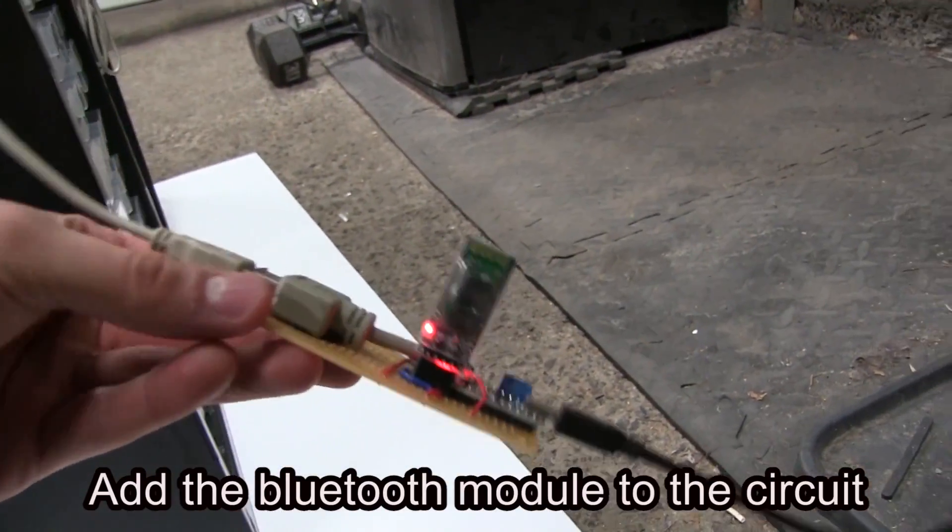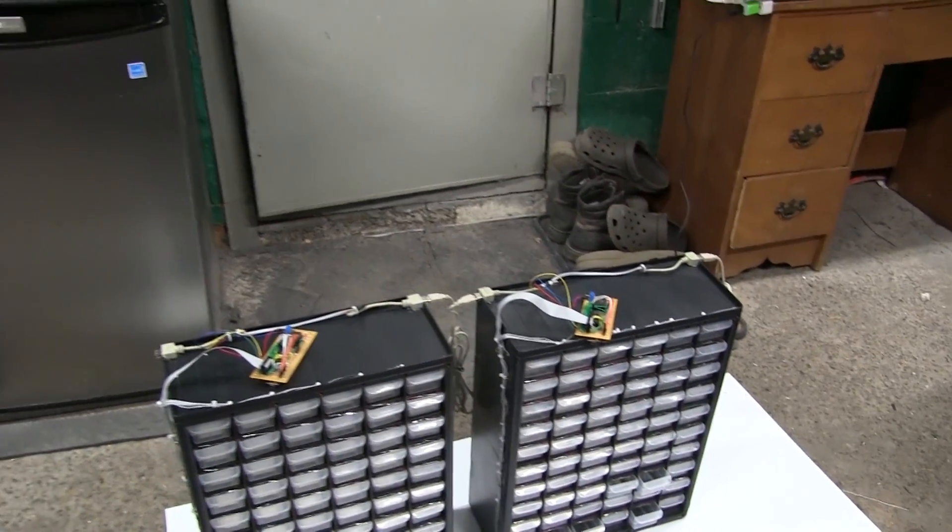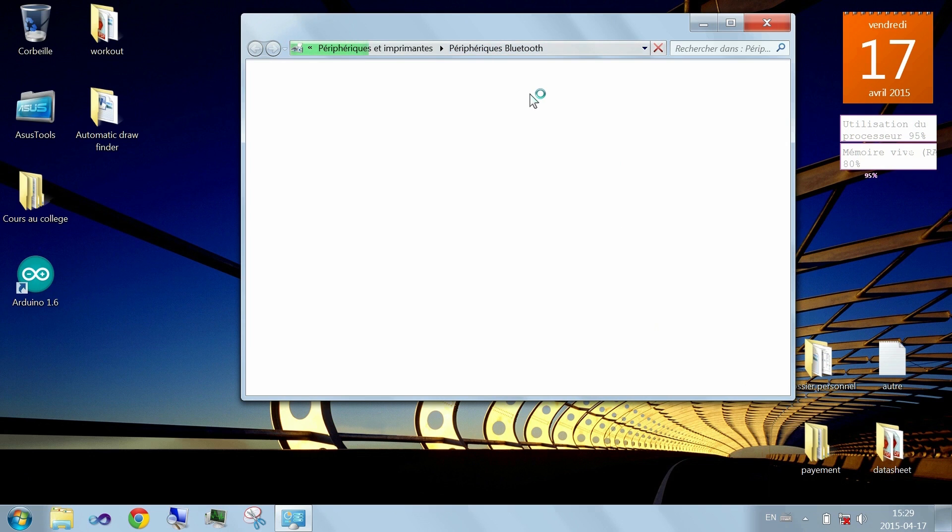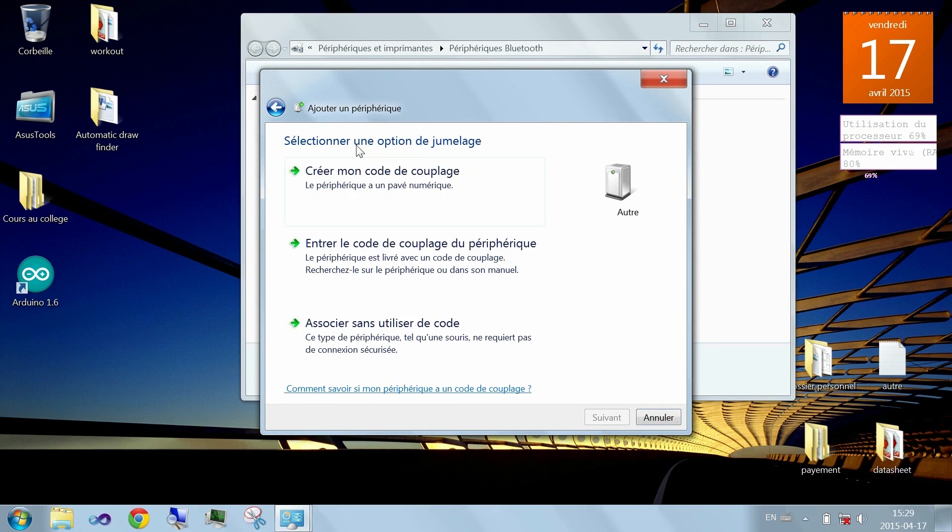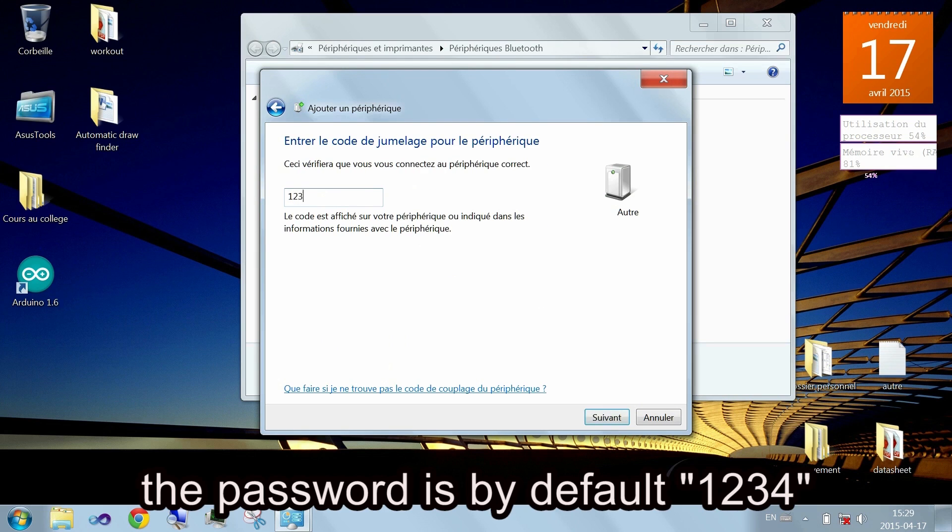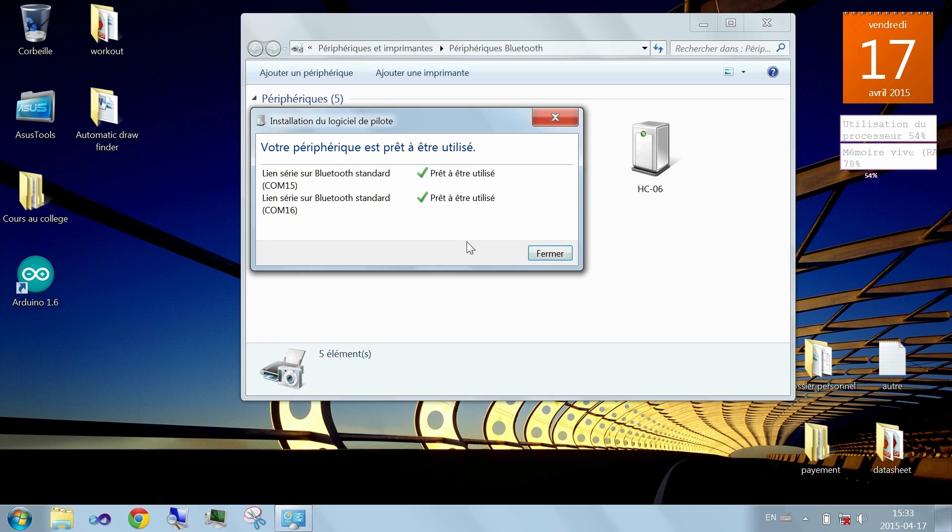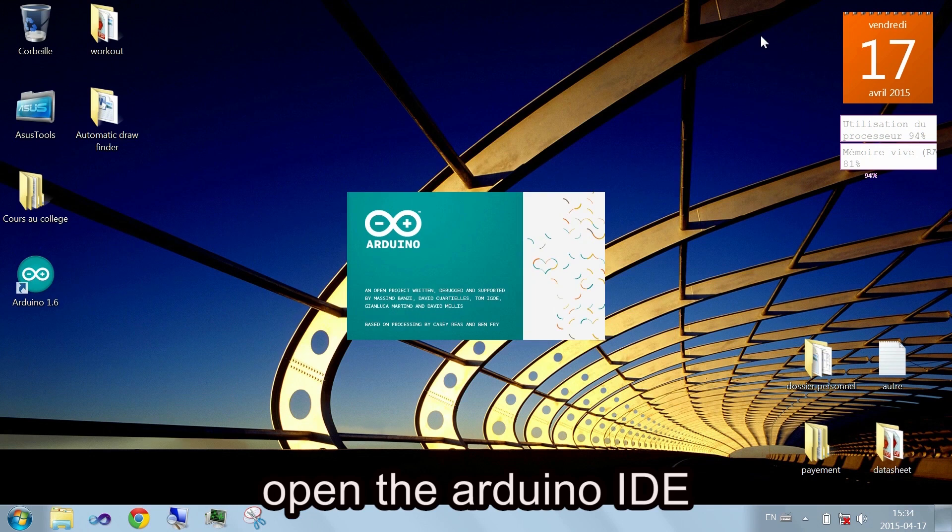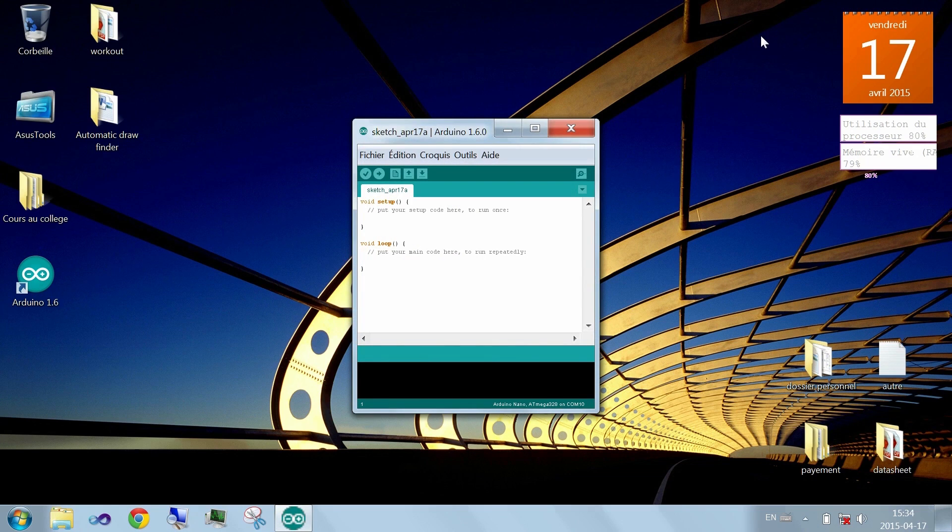Add the Bluetooth module to the circuit. Go to new Bluetooth device and add the detected module. The password is by default 1234. Now open the Arduino's interface. Select the Bluetooth port. Mine as you see is on COM15.